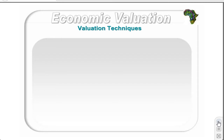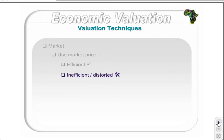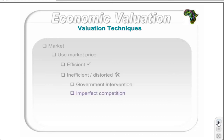If a market exists, then prices should be used as a basis of valuation. Examples would be the value of minerals. If the price is efficient, it can be directly applied. However, inefficient or distorted prices must be adjusted before they can be applied. Distortions can occur due to government interventions such as subsidies and taxes, imperfect competition, and information asymmetry. The adjusted market price is known as the shadow price.